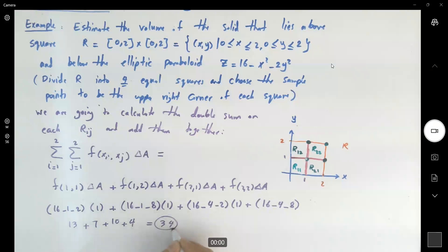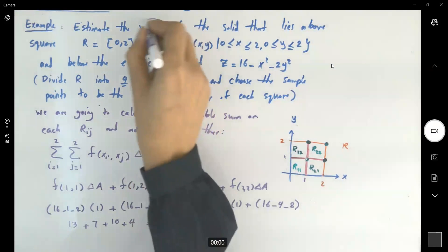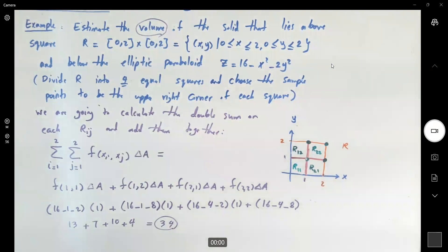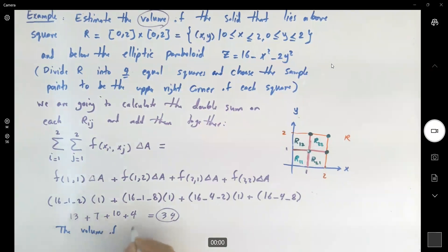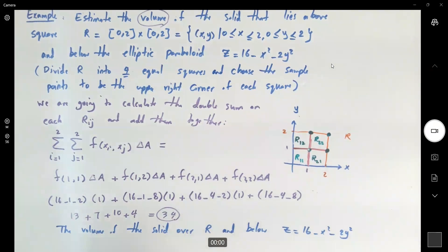Am I right? So it says the volume, the volume bounded by, of the solid over R and below z equals to 16 minus x squared minus 2y squared is about 34. Approximately 34.